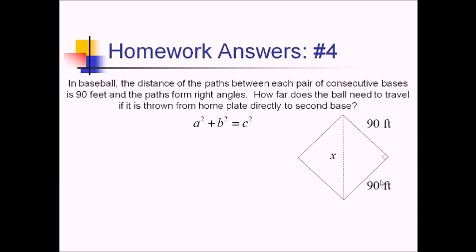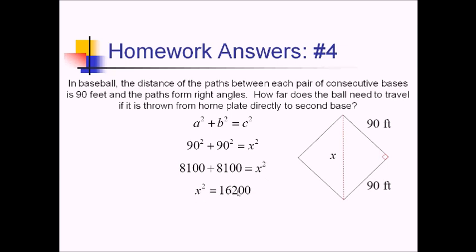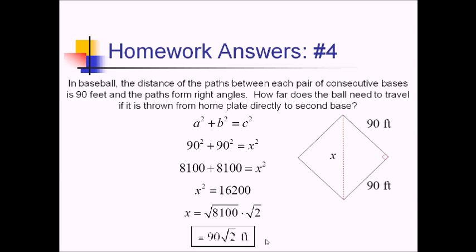So we'll have 90 squared plus 90 squared equals x squared. That's 8,100, so 8,100 plus itself, which adds up to 16,200. To simplify this, I know that I added two 8,100s together, so this is really just 8,100 times 2, which means I can square root the 8,100 to get 90. So 90 radical 2 feet would be our answer.